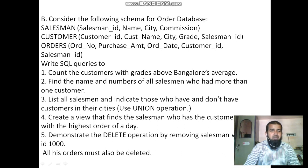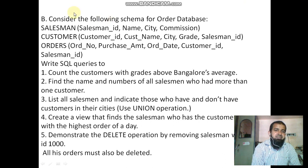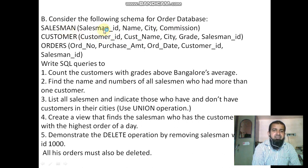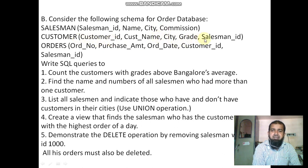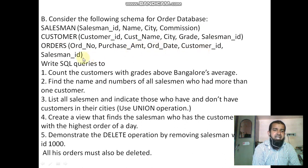Hello friends, now we'll solve the second lab program. The question is: consider the following schema for an order database. The Salesman table contains salesman ID, name, city, and commission. The second Customer table contains customer ID, customer name, city, grade, and salesman ID. The third table is Orders, containing order number, purchase amount, order date, customer ID, and salesman ID.